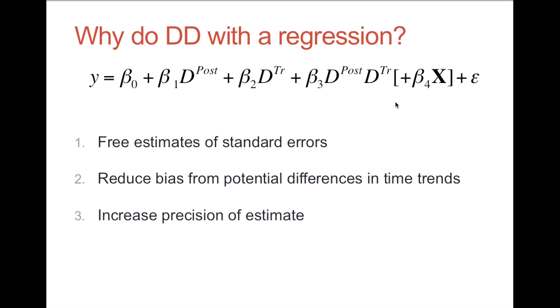Finally, if we control for important determinants of Y, that's going to reduce the variance of epsilon, our error term, and thus give us smaller standard errors for our estimate of the program effects.